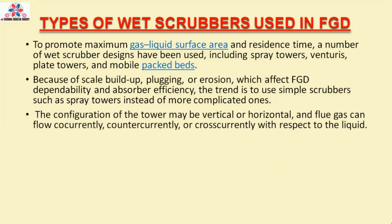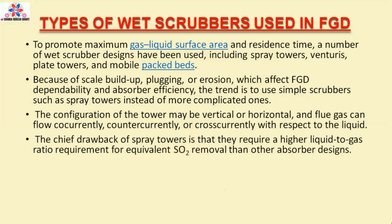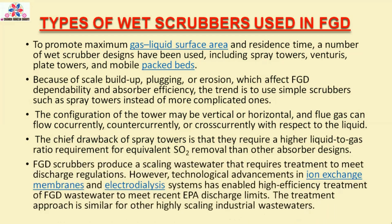The configuration of the tower may be vertical or horizontal, and flue gas can flow cocurrently, countercurrently, or crosscurrently with respect to the liquid. The chief drawback of spray towers is that they require a higher liquid-to-gas ratio for equivalent SO2 removal than other absorber designs. FGD scrubbers produce a scaling wastewater that requires treatment to meet discharge regulations. However, technological advancements in ion-exchange membranes and electrodialysis systems have enabled high-efficiency treatment of FGD wastewater to meet recent EPA discharge limits. The treatment approach is similar for other highly scaling industrial wastewaters.